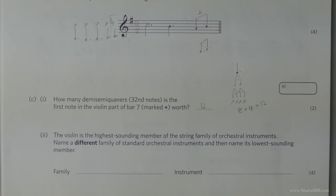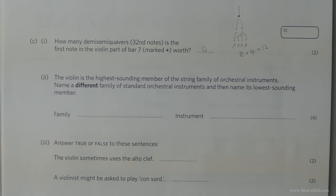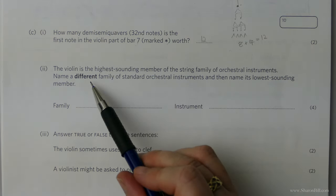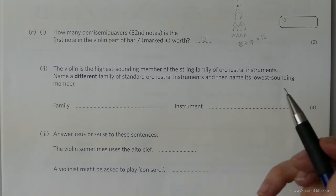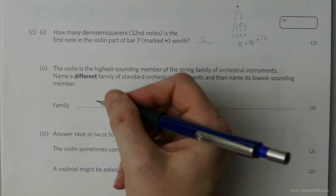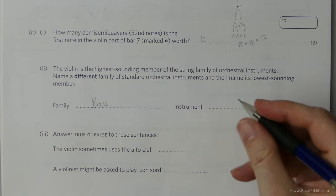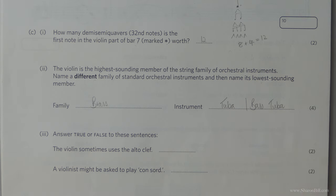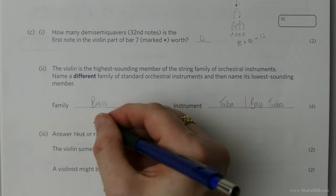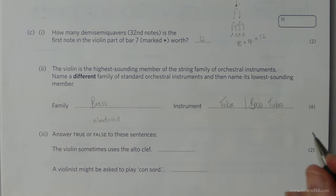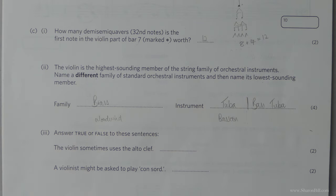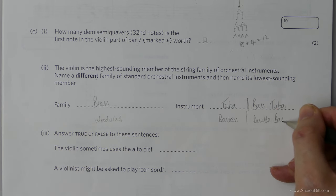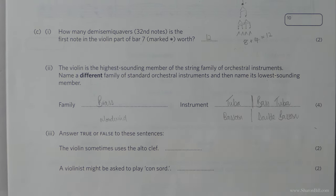And now we've just got a little bit of general orchestral information to answer. So we're told that the violin is the highest sounding member of the string family. So now we need to name a different family and name its lowest sounding instrument. So depending what family you choose depends what instrument you choose. If you choose the brass family, the lowest instrument will be the tuba. You could say bass tuba. If you choose the woodwind family, the lowest sounding instrument is the bassoon. Alternatively you could also say the double bassoon. That's even lower.